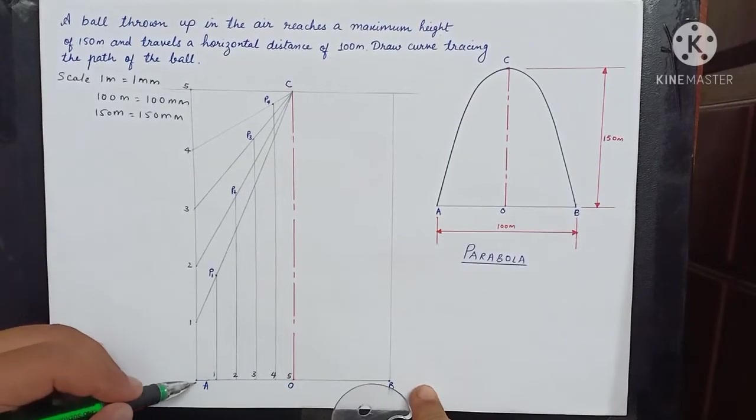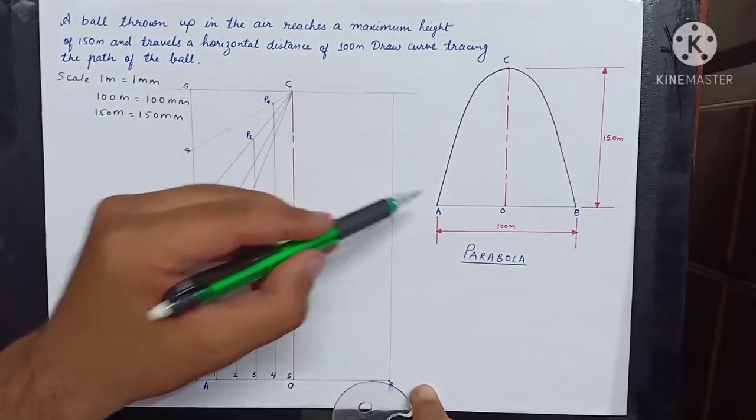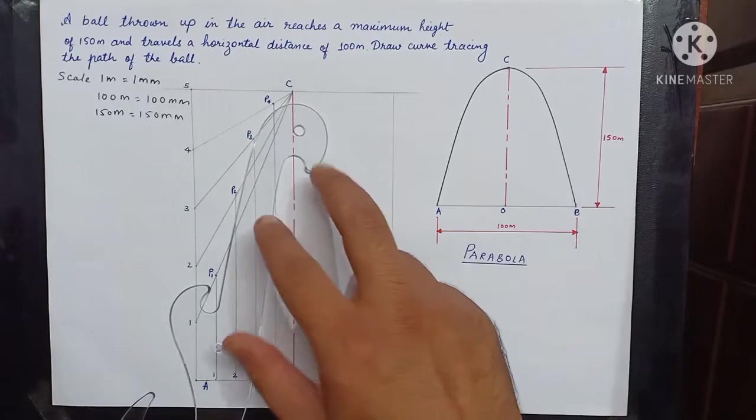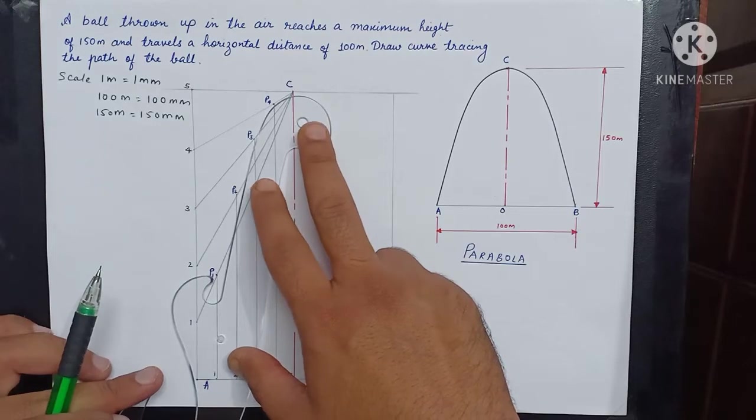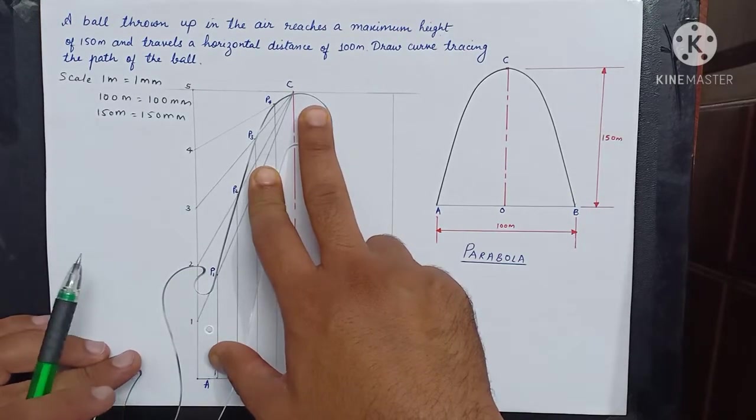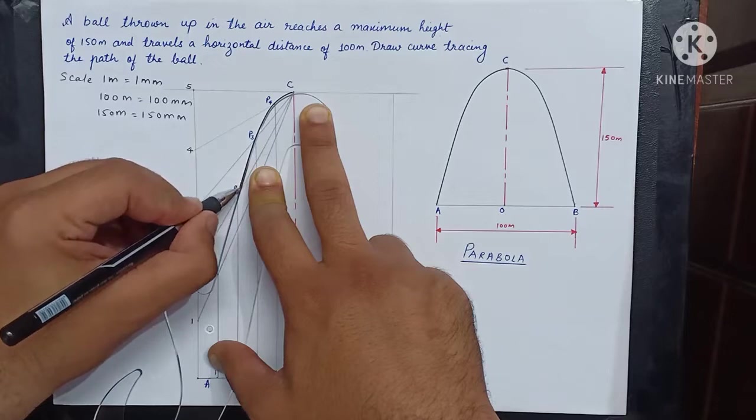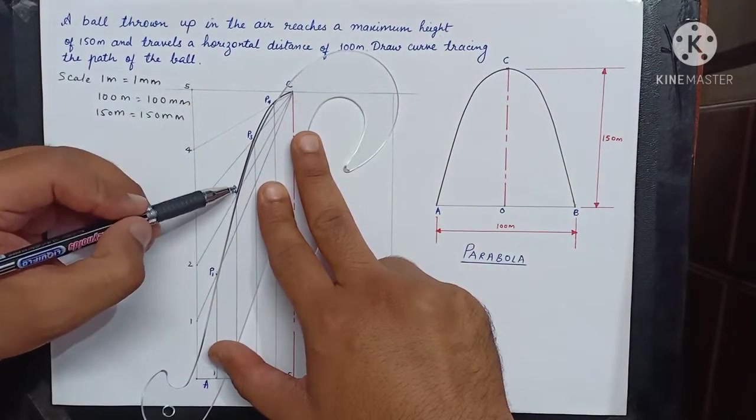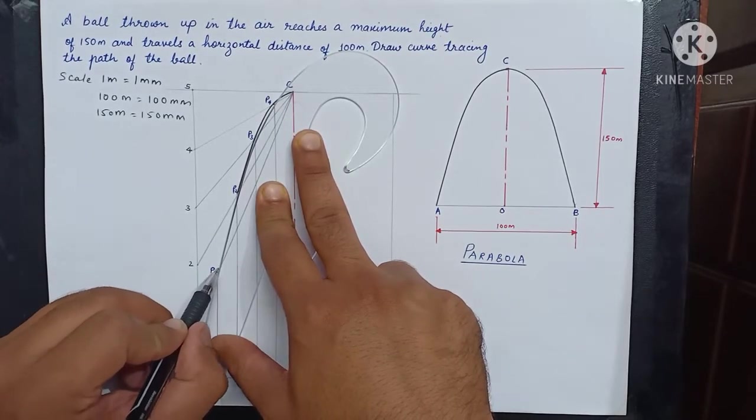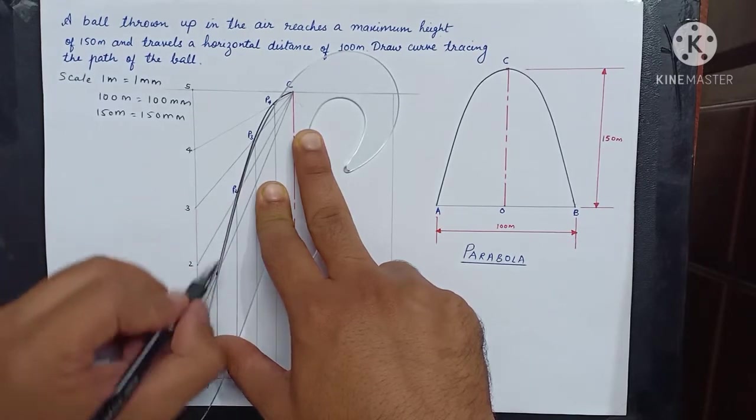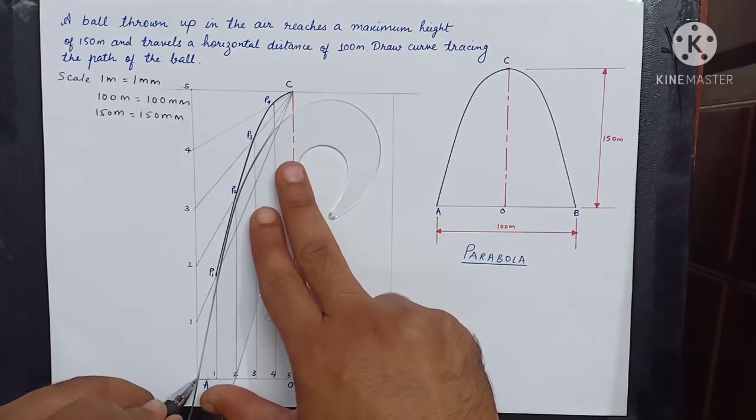Now by joining points A, P1, P2, P3, P4, and C, we will get half of the parabola. So we connect it by using a French curve. This particular portion can be joined by French curve. This is the best profile you can get here. Try to connect minimum three points at a time. Then we can connect P3, P2, and P1. And finally A and P1.